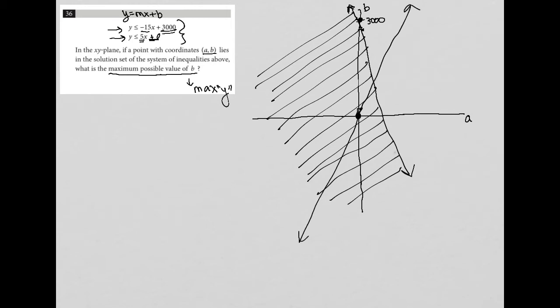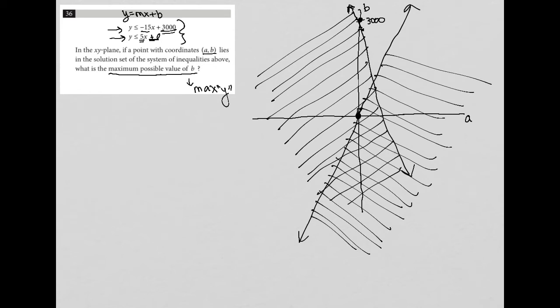And because I'm shading below that line, because it says Y is less than or equal to, I'm going to just change the direction of my lines here so that we can easily see where these lines intersect. Because where they intersect represents the solution set for the system of inequalities. So everything, and I'll just darken the lines, everything to the left of this, right, and to the right of this represents the solution set.